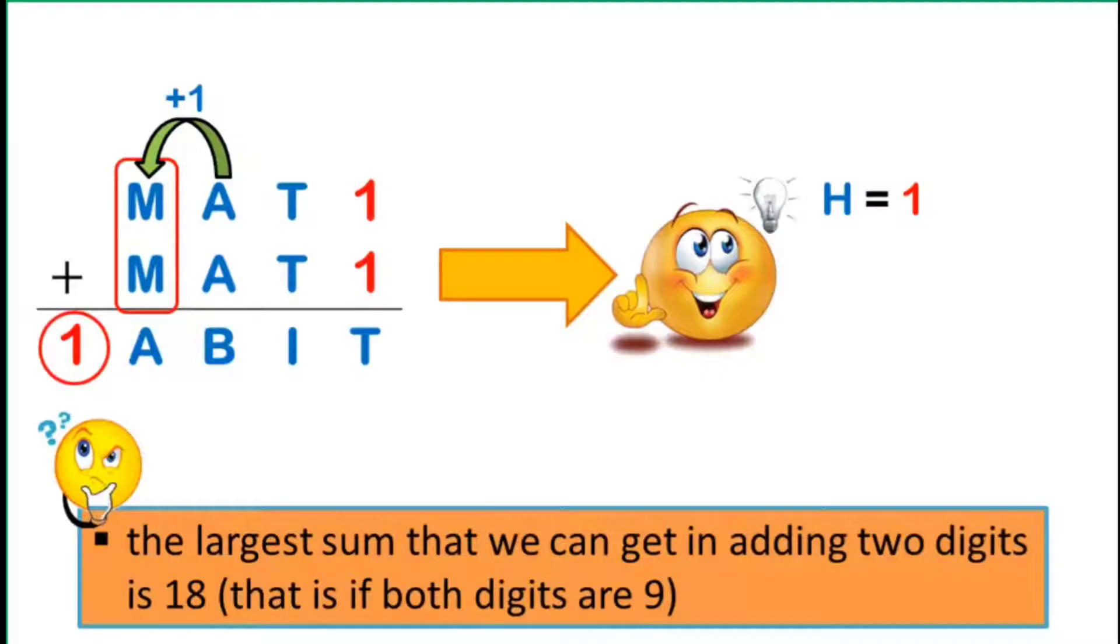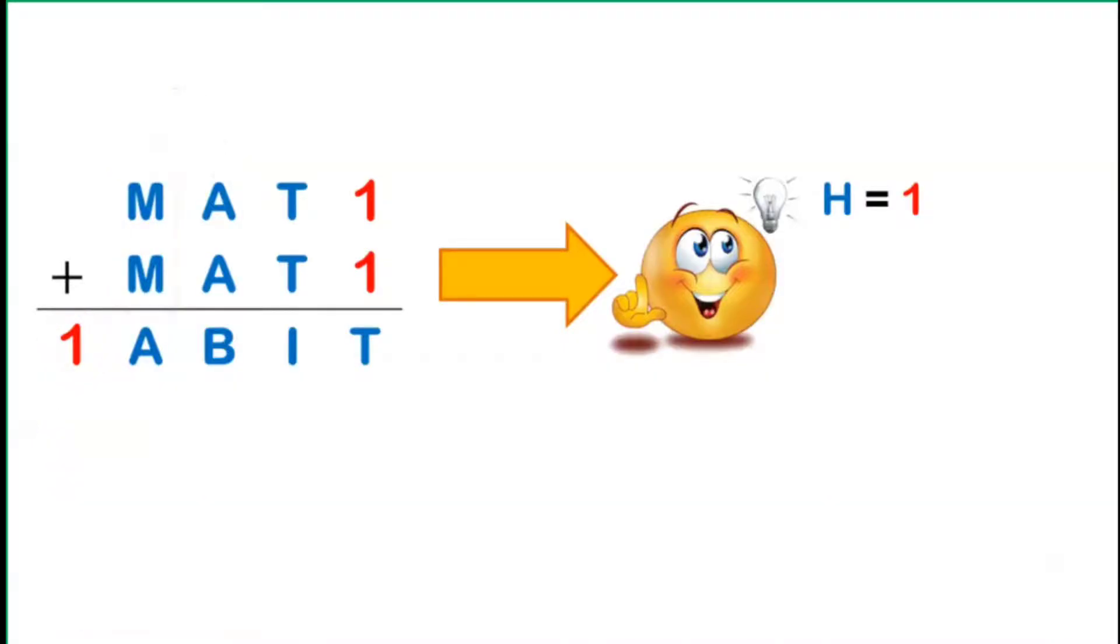We are now doing pretty good. Next, in the 1's place, we have 1 plus 1, which is obviously equal to 2. It follows that the letter T is equal to 2. And also, we replace all the remaining Ts by 2.